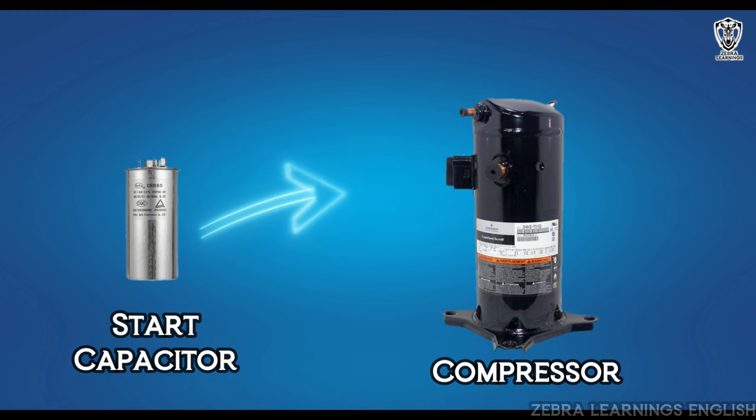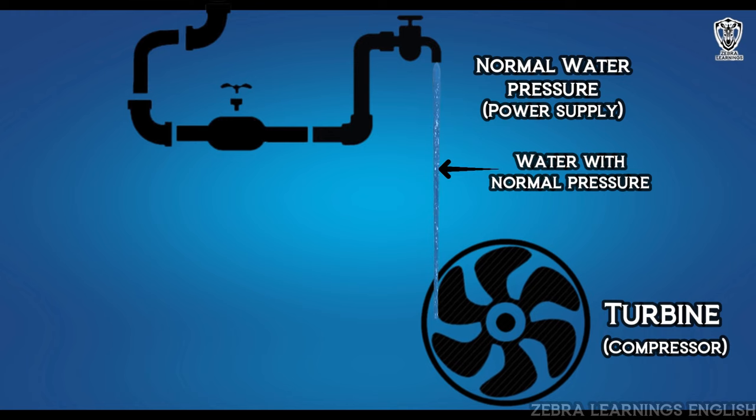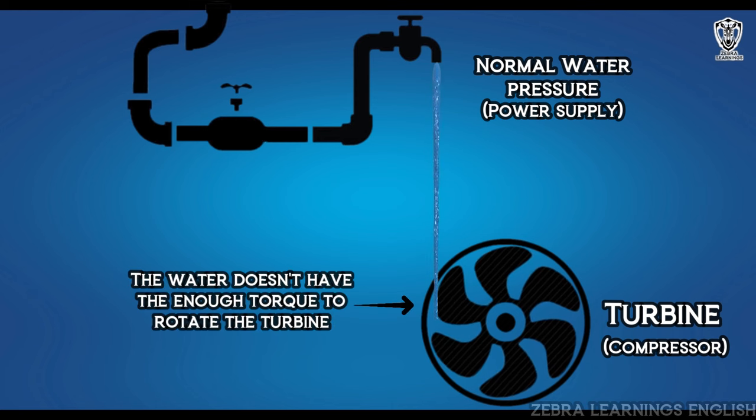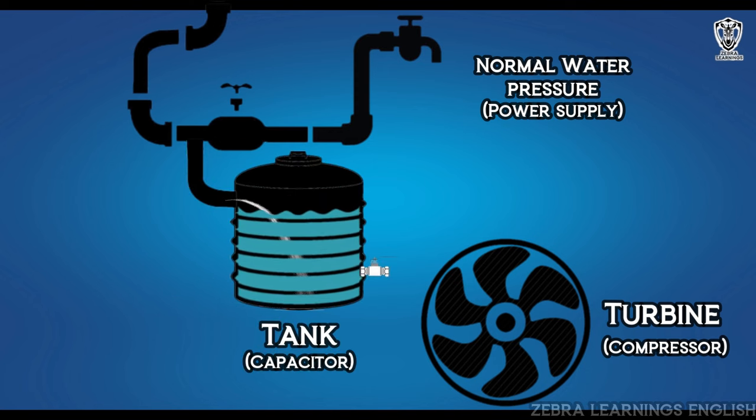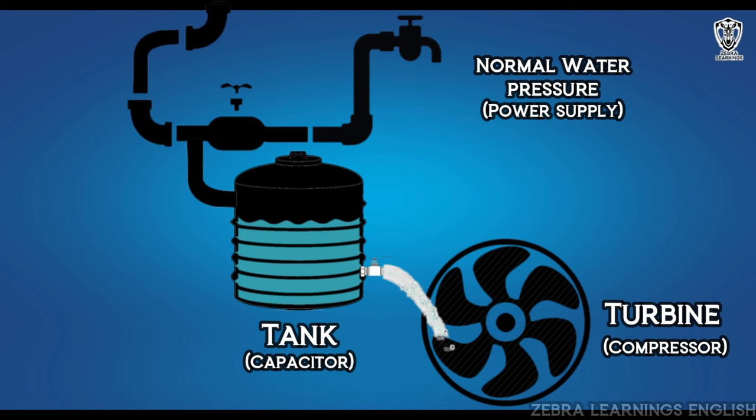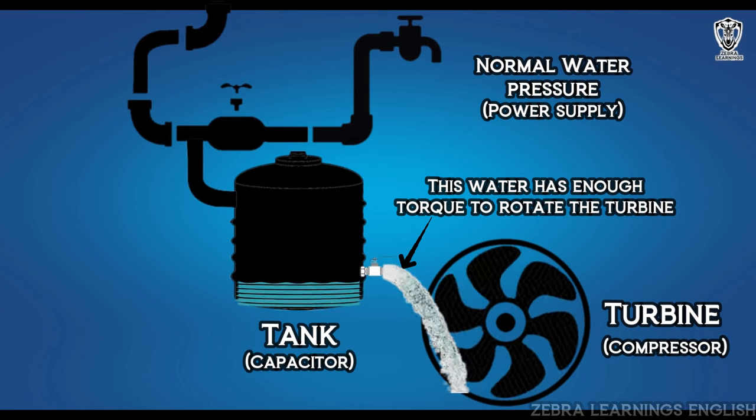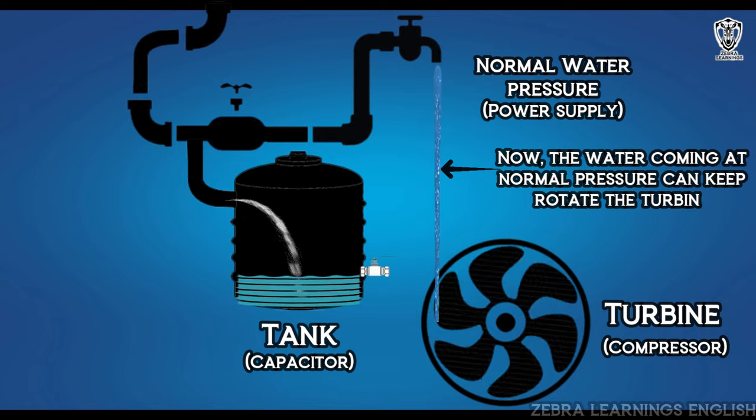Let's do an experiment to understand this easily. We can try to rotate a turbine with water coming at normal pressure. Since the required torque to rotate the turbine is not in the pressure of this water, when this water is filled in a tank, and then when the water in the tank is opened, the water comes under high pressure and the required torque to rotate the turbine. After the turbine starts rotating, the turbine can be kept rotating by the water coming at normal pressure.